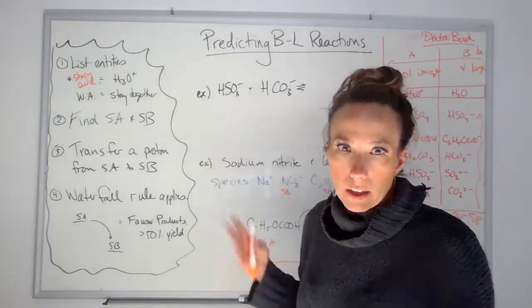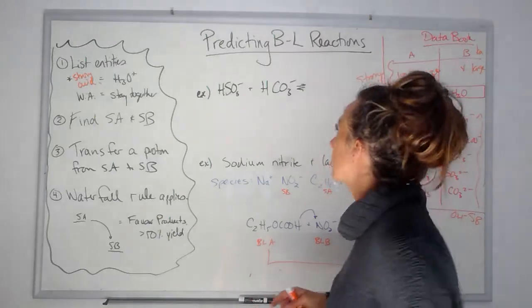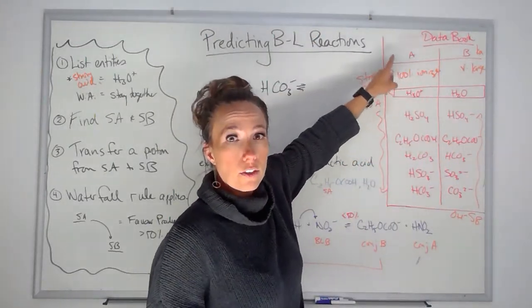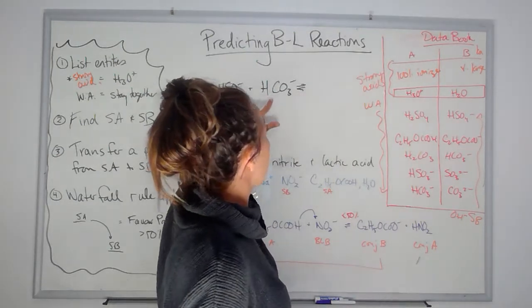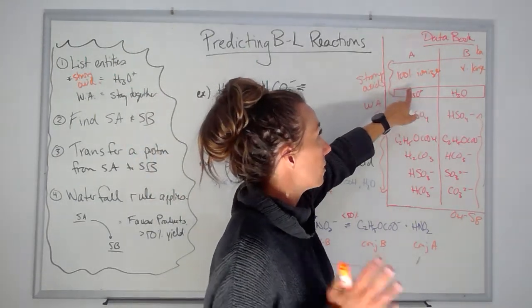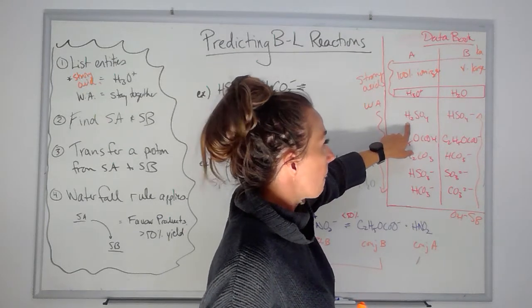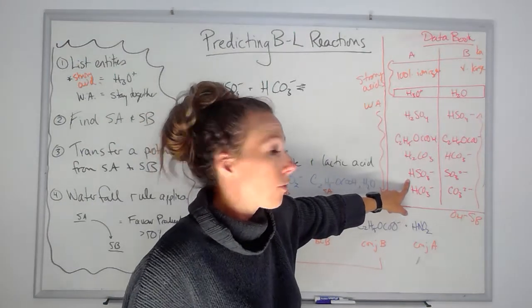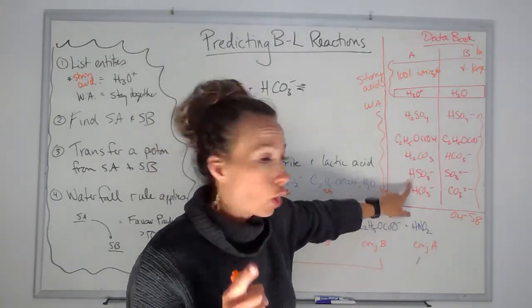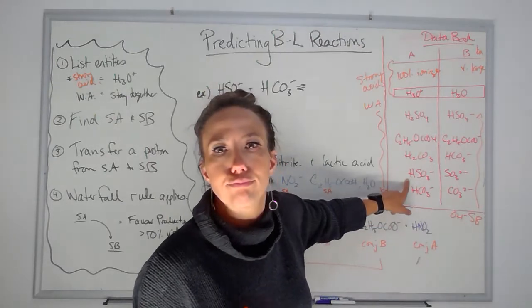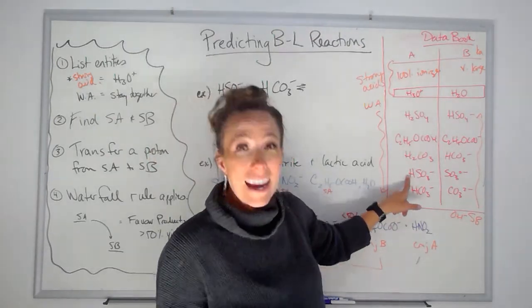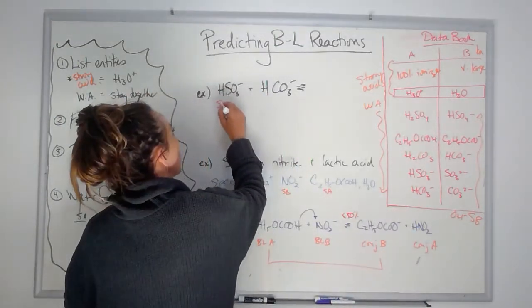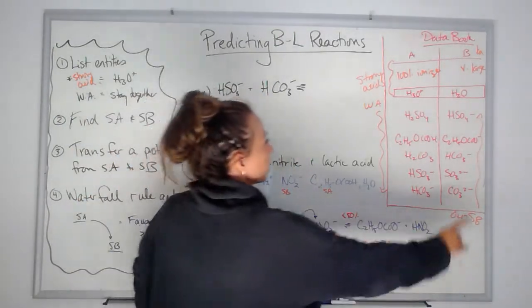Our species are those, and water — but water's not going to be our strongest, so I haven't bothered to write it down. I need to go to this table, put my finger on the top left-hand corner, and figure out which one of these is stronger. It's not a strong acid at all, so I keep going — and here: HSO3− is stronger than HCO3−. So HSO3− becomes my strongest acid.